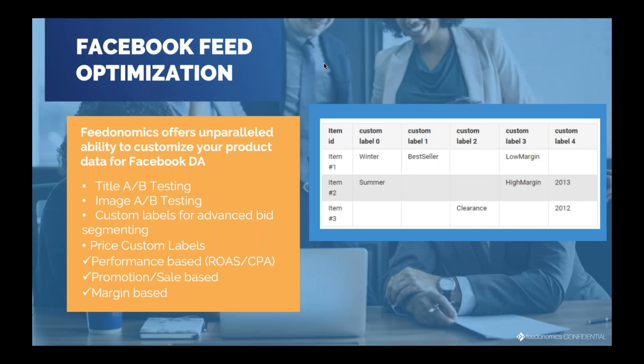At the heart of what we do is feed optimization. There are a lot of interesting things you can do if you really utilize different attributes available — specifically custom labels. Because Facebook's feed format is very similar to the Google Shopping feed format, a lot of people just take their Google Shopping feed and send it straight to Facebook, assuming it will perform well. But there are very specific Facebook optimizations you should be doing. The feed is something we believe should be constantly looked at and improved upon, just like campaigns and bids.